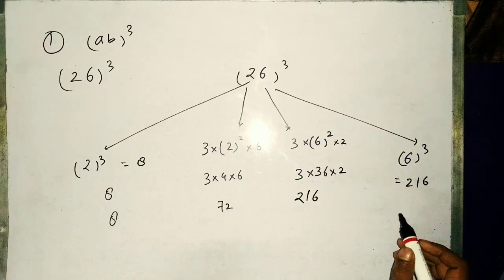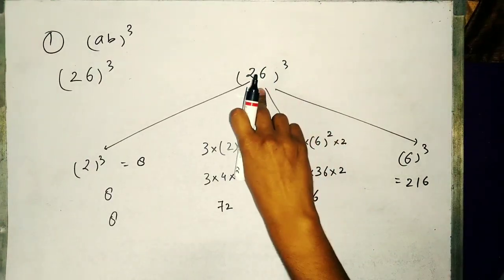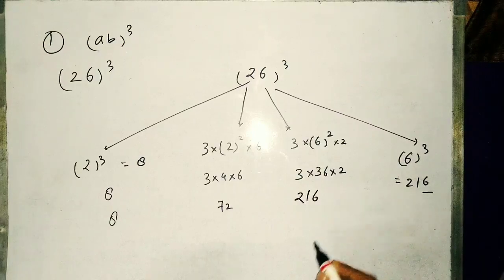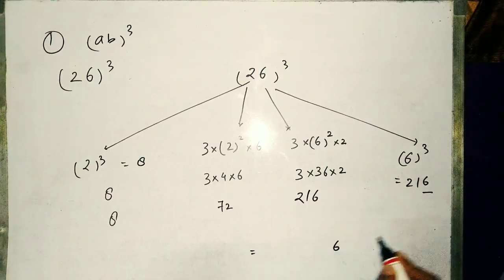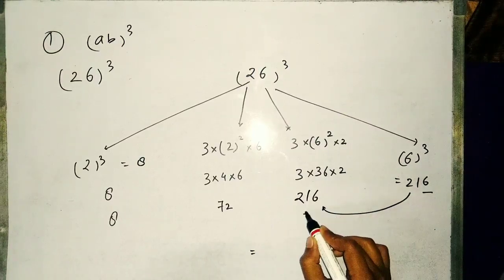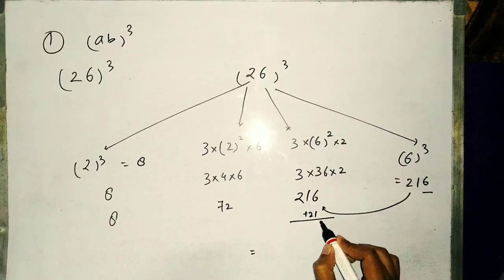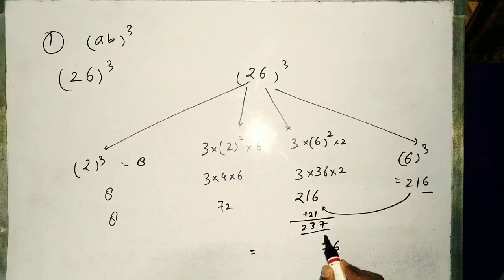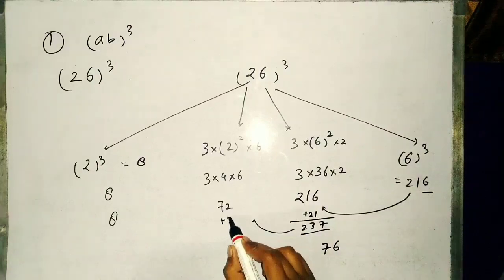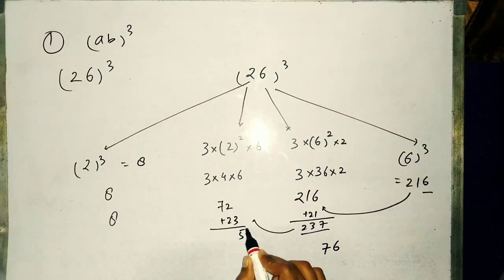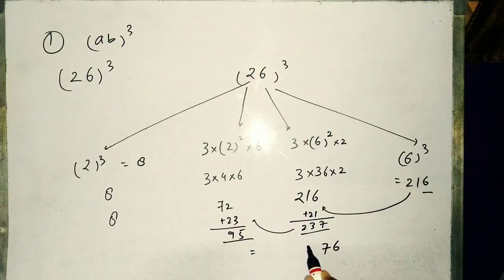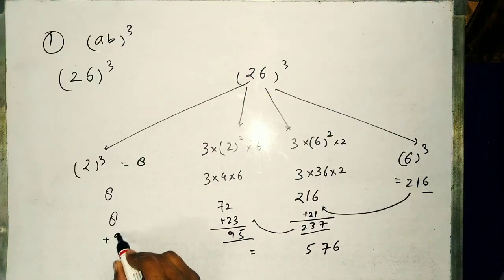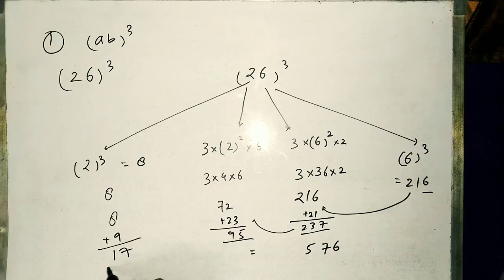We have taken single digit so we will write single digit 6 and carry forward 21 plus 21 which is 237. Write last digit 7, carry forward 23. Write last digit 5, carry forward 9. 970, write 17.